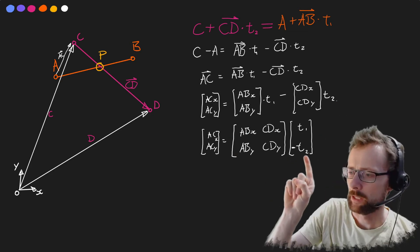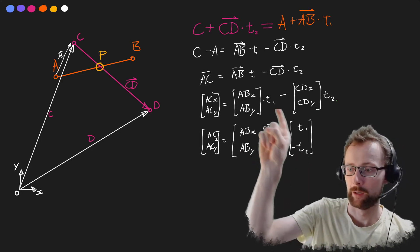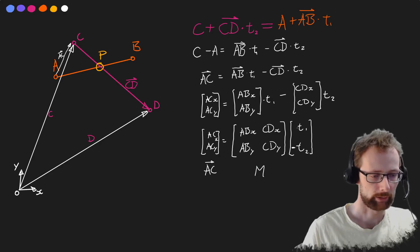There needs to be a little negative sign here on the t2 so that we end up with the correct sign from up here. Let's go back to calling this ac. Let's call this matrix here m and let's call this vector here just t.